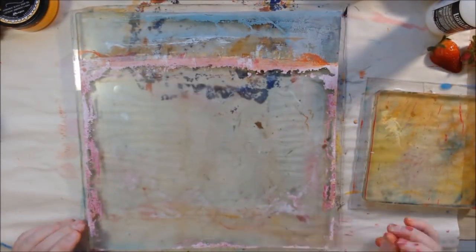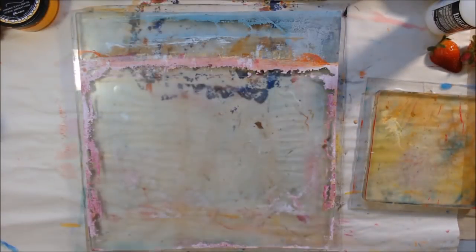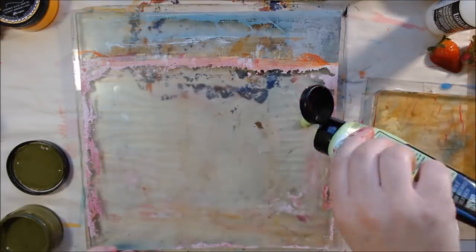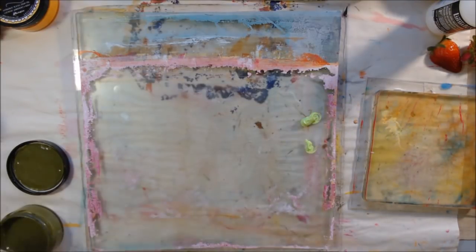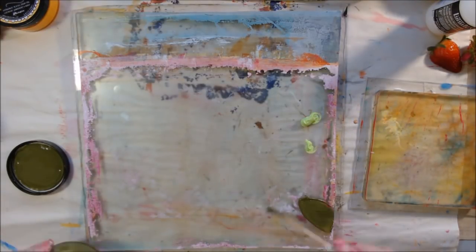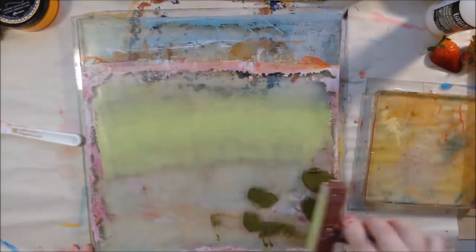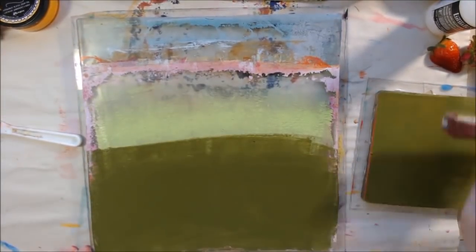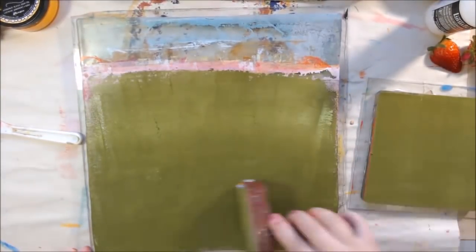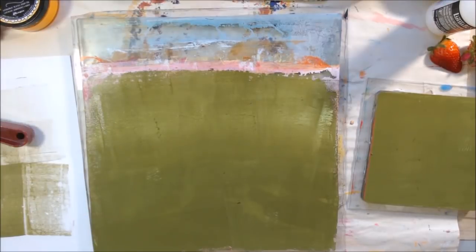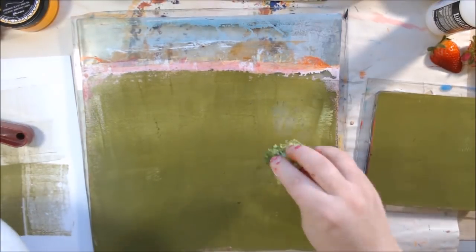This one you can see the area where I put the deli paper down and it wrinkled, and then you get those kind of lightning lines, looks like lightning through the middle of the print. That frequently happens with deli paper. It goes down smooth but then it wrinkles. I don't know why, I guess it absorbs some moisture from the paint. But I don't care, I like the look of it, so it doesn't matter to me.